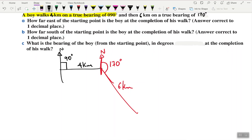How far east of the starting point? Let me know east is that direction. How far east of the starting point is the boy at the completion of his walk? So basically we want to know what that distance is there. To do that we already know that four kilometers is this bit here. I'll draw this red line down there, so that's four kilometers still here.